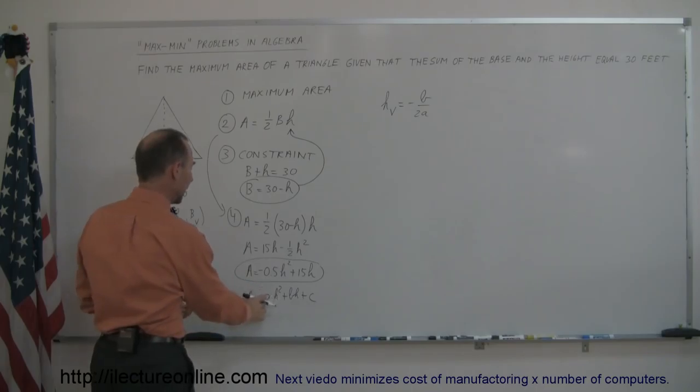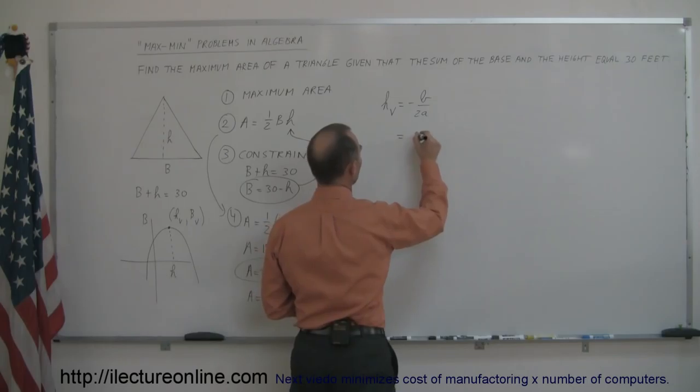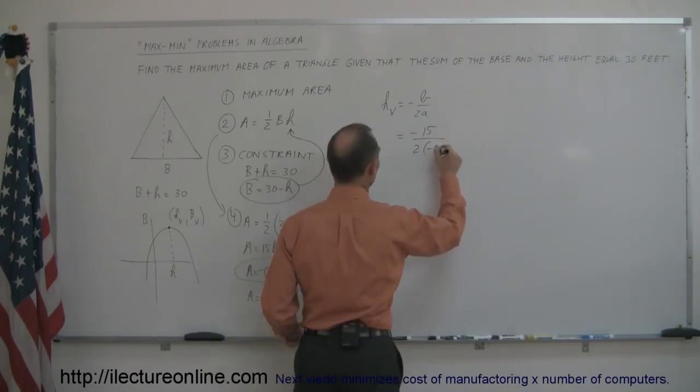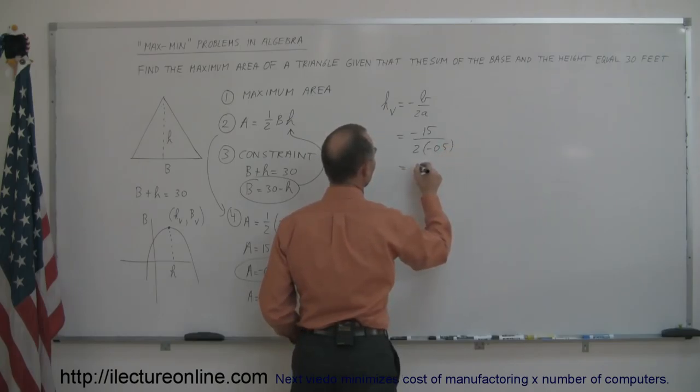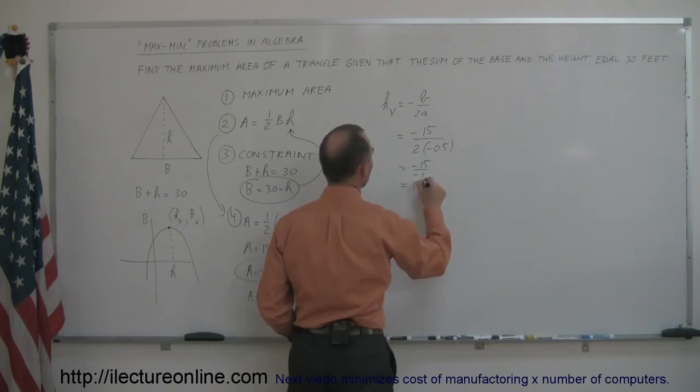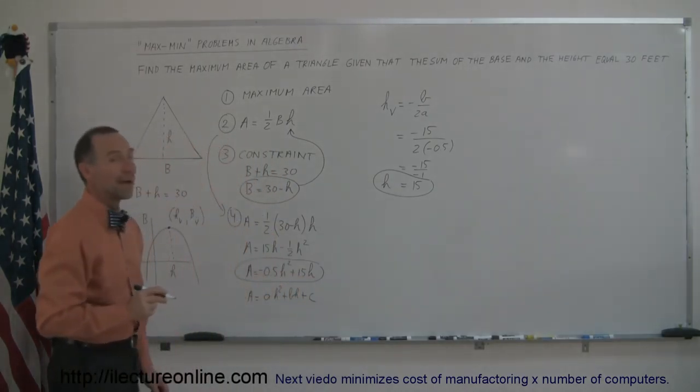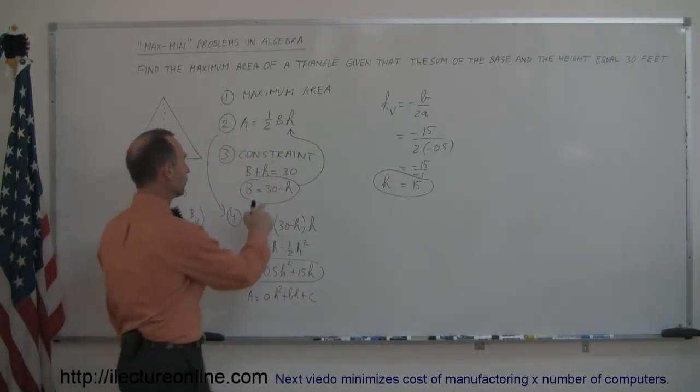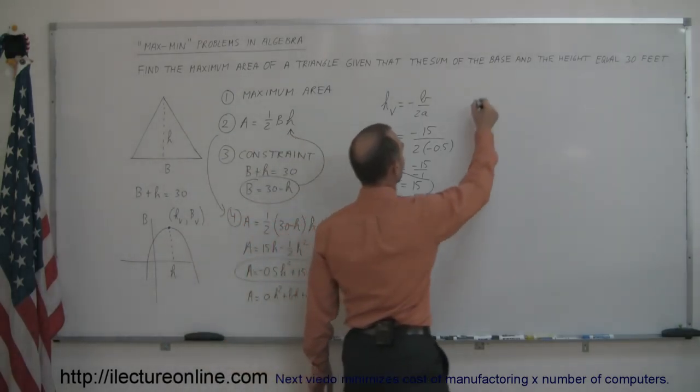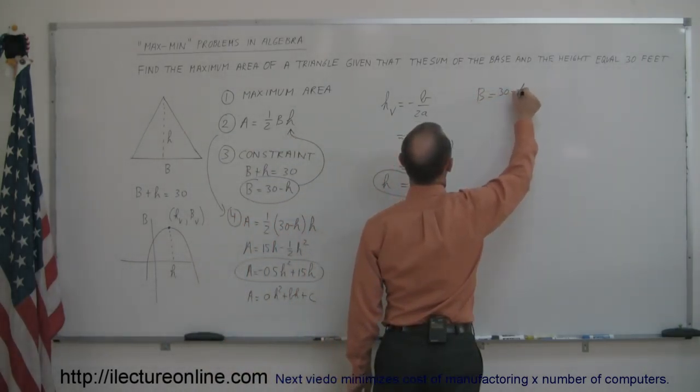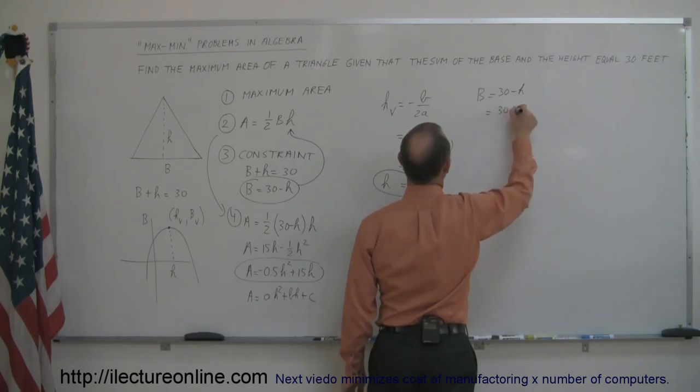Since a is equal to -0.5 and b is equal to 15, we can say that this is equal to -15 divided by 2 times a, which is -0.5, so this is equal to -15 over -1 or equal to 15. So h equals 15 should give us the maximum area. Now if h is 15, we plug the constraint in here, we get b equals 30 minus h, and since h is 15, we can also see that b must also be 15.